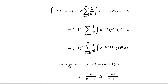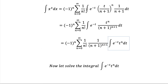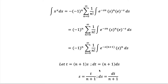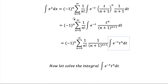We now substitute t equals (n plus 1) times s. Differentiating, dt equals (n plus 1) ds, so ds equals dt over (n plus 1), and s equals t over (n plus 1). Performing this substitution in the integral, instead of e^(-s(n+1)) we substitute t, giving e^(-t). Everything in the front is rewritten, and the remaining part with e^(-t) is now clear.